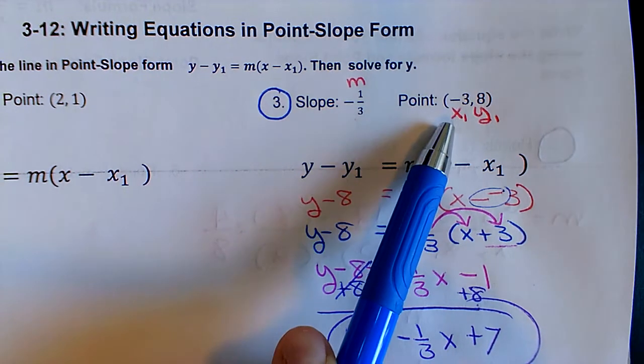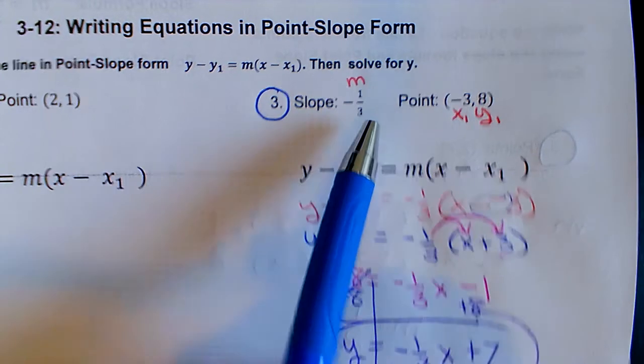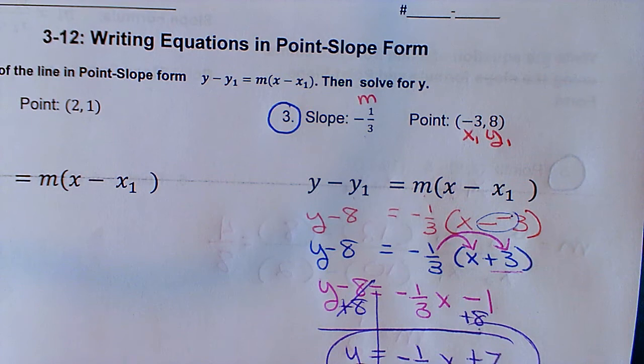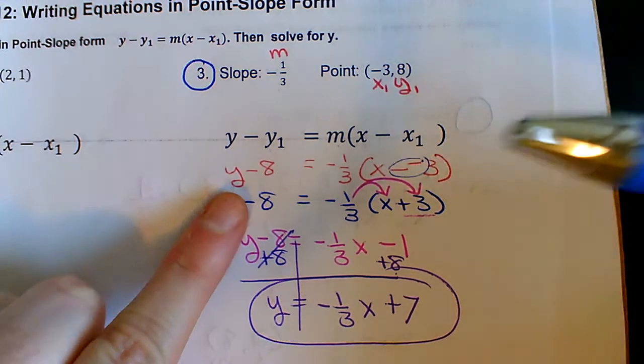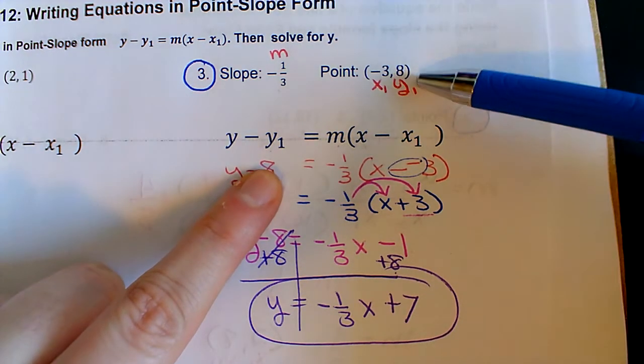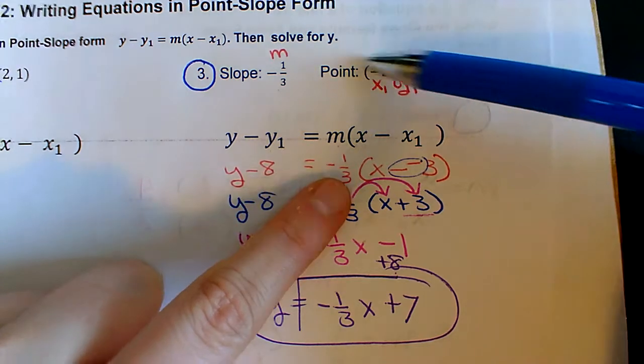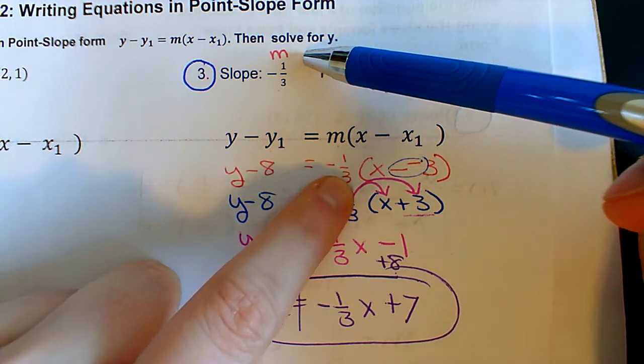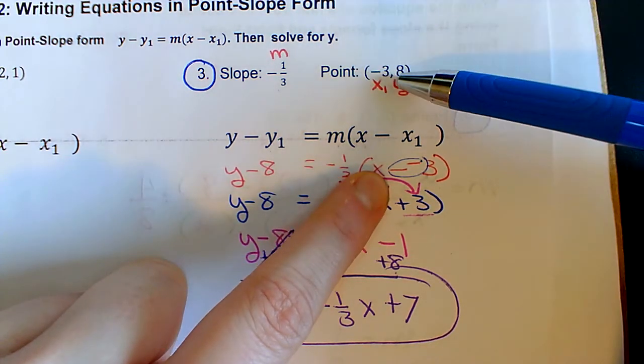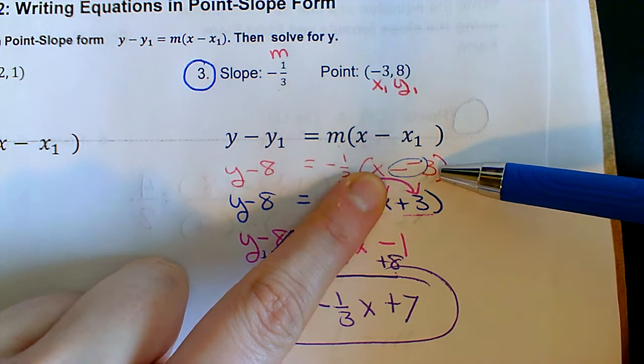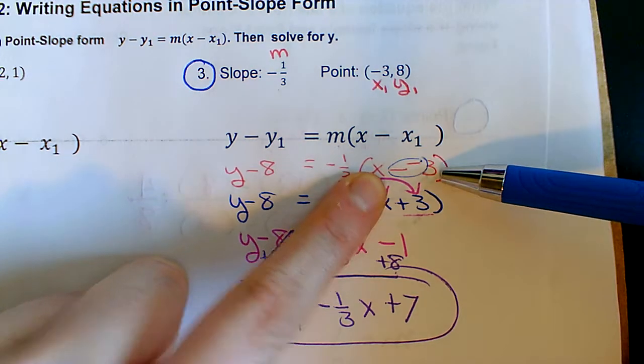Now we're going to be plugging in our values for x₁ and y₁ and m, and this is the one time where you do not want to put parentheses when you replace a letter. So this is going to go y minus my y₁ value, which is 8, equals m, so negative 1/3, times x minus x₁. So since my x₁ was a negative number, we've got minus negative 3.